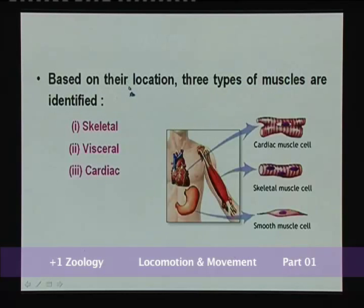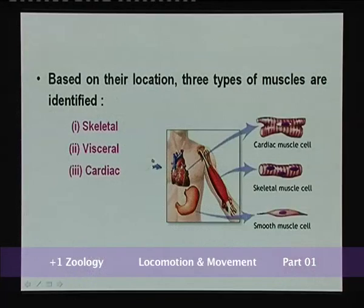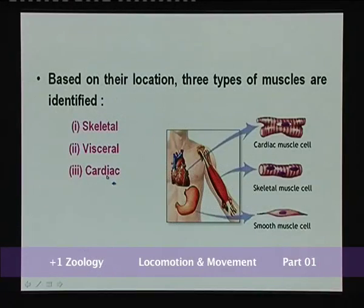Based on their location, there are three types of muscles. Skeletal muscles are attached to the skeleton bones. Visceral muscles line the visceral organs like the intestine and blood vessels. Cardiac muscles are found especially in the heart. Let us see each in detail.